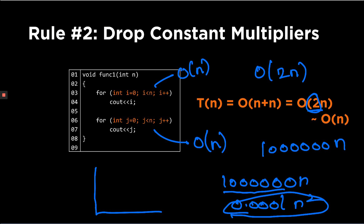The reason is that if we plot the graph for these two functions, the linear graph — y equals a million times n — might be displaced upward by the constant, while the quadratic graph, although smaller for small values of n, will at a certain point n-naught overtake the linear graph. Because this function is quadratic and the other is linear, the quadratic will eventually dominate.